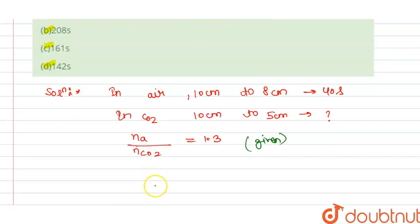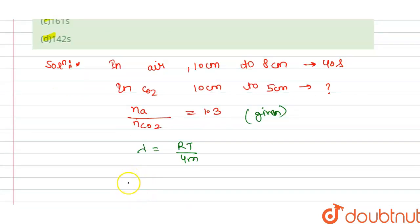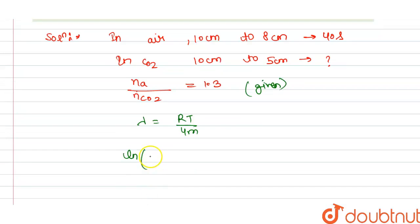From this we get λ (wavelength) is equal to Rη divided by 4m. From this we get, if we take log both sides, ln(10/8) and ln(10/5)